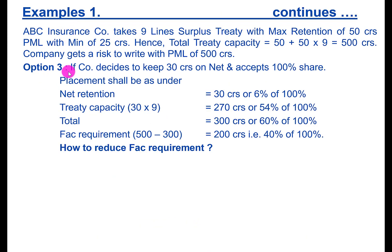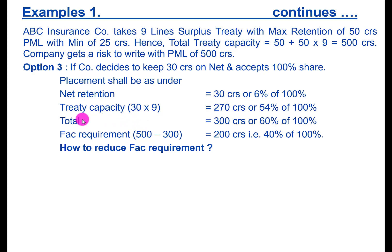In Option 3, the company decides to keep 30 crores retention and accepts 100 percent share, with the same nine lines treaty capacity of 500 crores. Net retention is 30 crores, which is 6 percent of 100 percent (30 divided by 500). Treaty capacity is nine lines, 270 crores, which is 54 percent of 100 percent, and total is 300 crores.